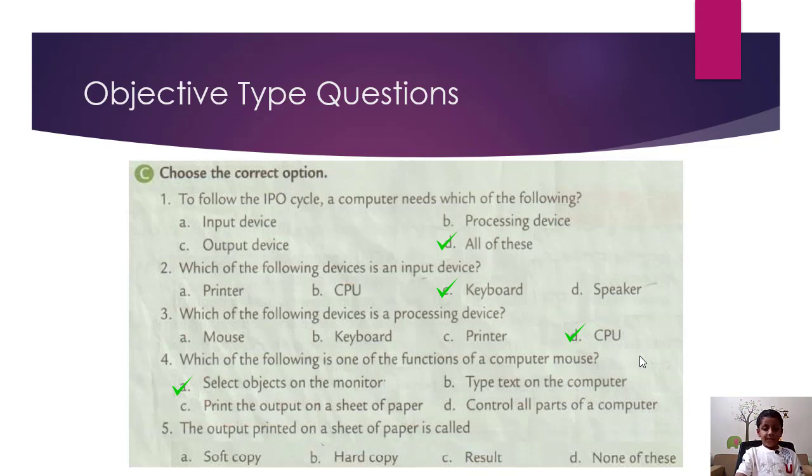Fifth, the output printed on a sheet of paper is called the hard copy because we can touch it.